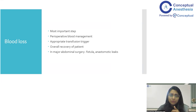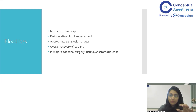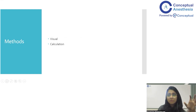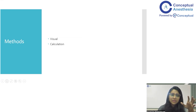In major abdominal surgeries, perioperative anemia is associated with fistulas and anastomotic leaks. Perioperative anemia is associated with increased morbidity and mortality in patients undergoing major abdominal or any major surgeries. The methods for blood loss estimation can be classified into two: one is the visual method, and the other is the calculation method.